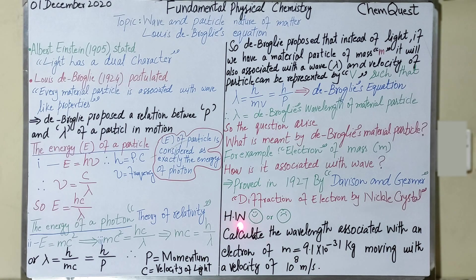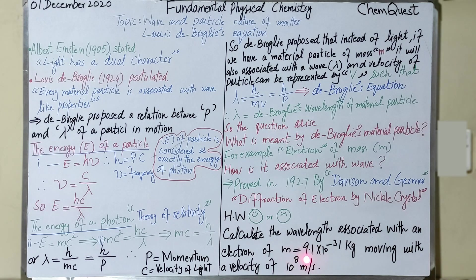I hope you will like this lecture and find it useful. If you have any problem, difficulty, or feedback, you are very welcome to mention it in the comments. Your homework is to calculate the wavelength associated with an electron of mass m. The value of m for an electron is 9.1 × 10⁻³¹ kg, and it is moving with a velocity of 10⁸ m/s. We will meet in the next lecture with the Davisson and Germer experiment.